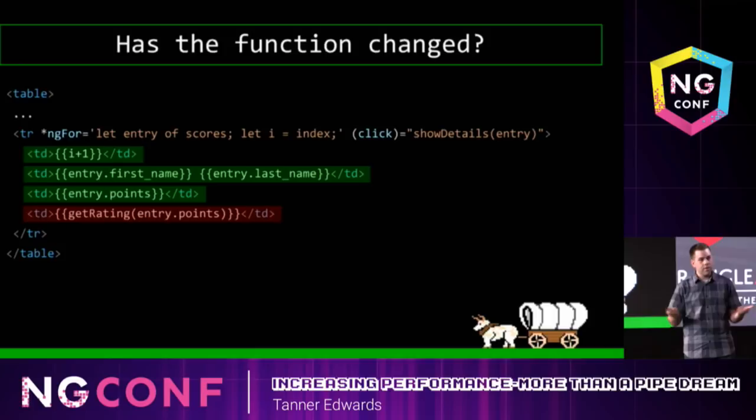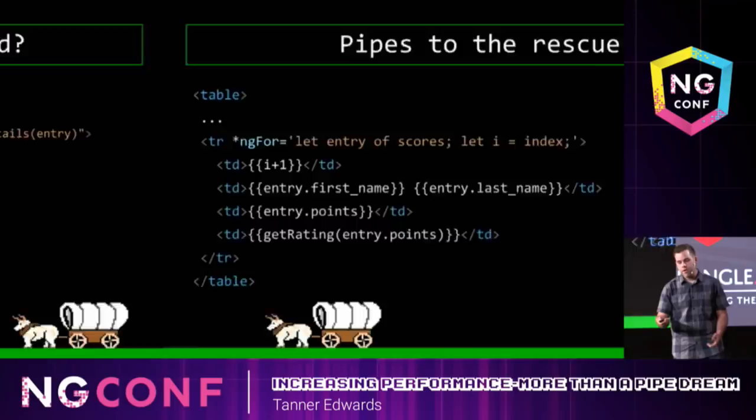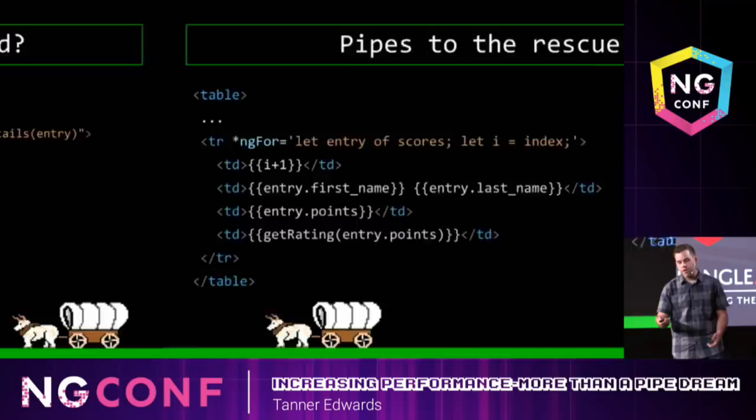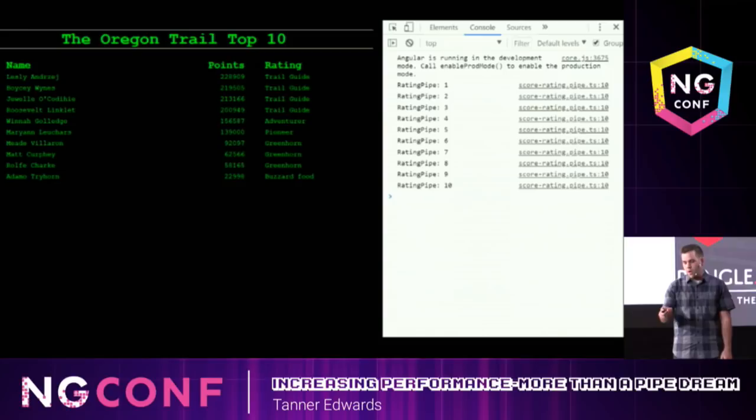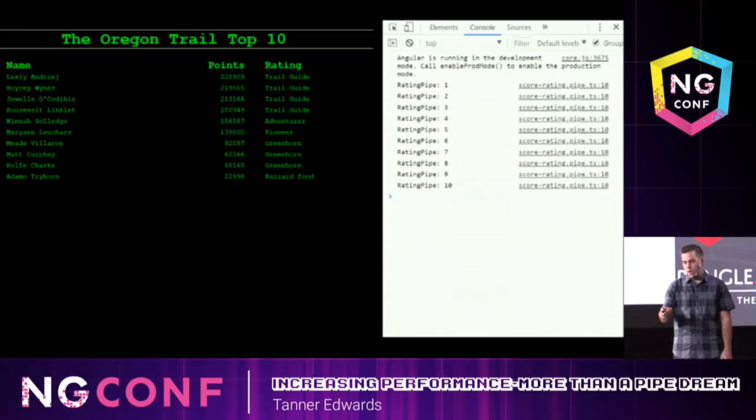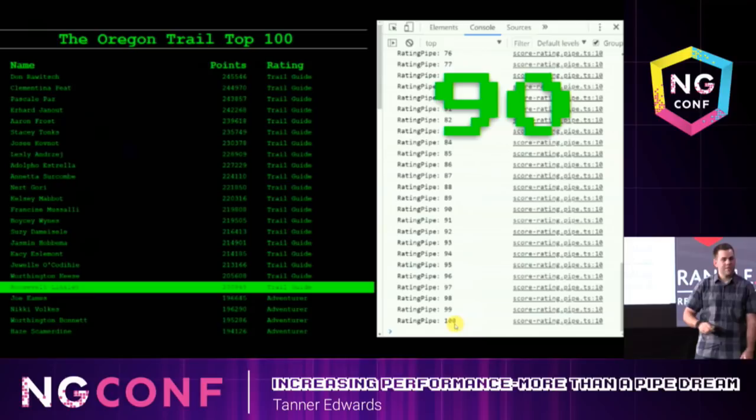So we know the problem and we know what's causing it, but what can we do to fix it? Let's go back to our template, take that function, and swap it out for a pipe. Now when we fire up our app, we see our pipe function is called 10 times. If we change it to the top 100 rows, our pipe function is called 90 times. And clicking on the rows does not make it get called any more times.